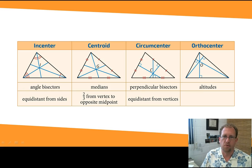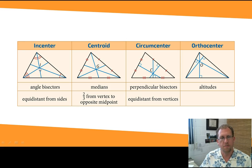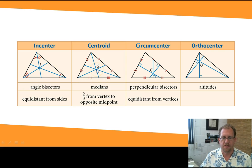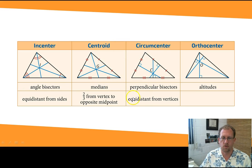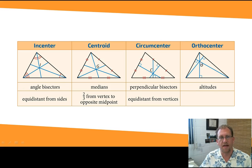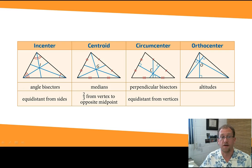This brings us to a nice summary of the centers of triangles we've found. The incenter — the center of the inscribed circle — is equidistant from all sides. The centroid — found using all the medians — is two-thirds from each vertex to the opposite midpoint. The circumcenter is found using the perpendicular bisectors and is the center of a circle that circumscribes the triangle, touching all vertices. The orthocenter is found using all of the altitudes, and it can sometimes fall outside the triangle, so be careful when finding it.